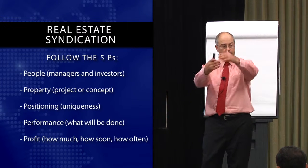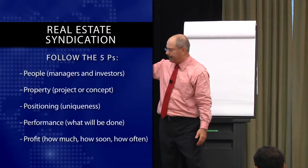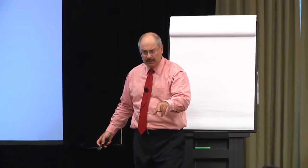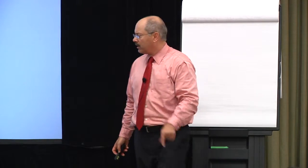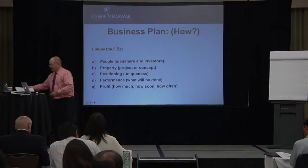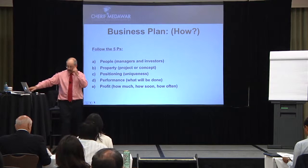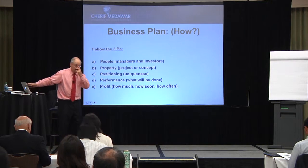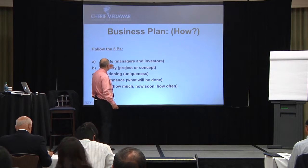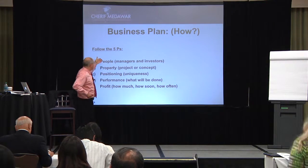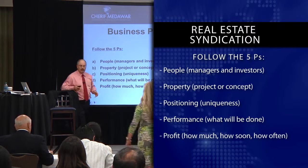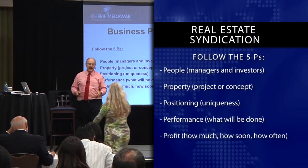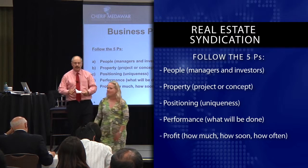When people read this, they can see who are the people, what's the property, what's the positioning, what kind of performance they're going to have, and what's the profit. The five P's are very important: people, property, positioning, performance, profit. You can literally do a business plan in one hour if you know what you're doing.